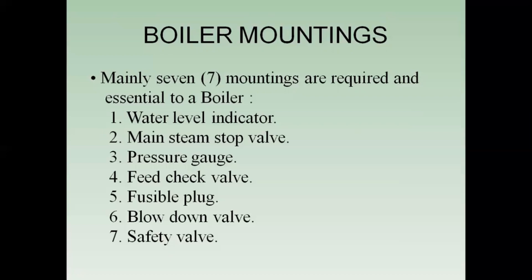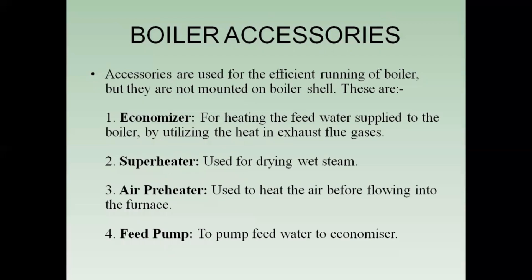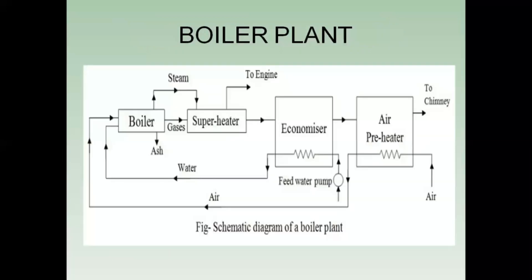Then comes the blow down valve. Then comes the safety valve — it blows off the excessive steam into the atmosphere and maintains pressure within the safe limit. Now, boiler accessories are the parts of the boiler which are used for the efficient running of the boiler, but these are not mounted on the boiler shell. Firstly, the economizer is used for heating the feed water supply to the boiler by utilizing the exhaust flue gases. The superheater is used for drying the wet steam. The air preheater is used to heat the air before flowing into the furnace. The feed pump raises the water pressure to push water into the economizer before it goes to the boiler.